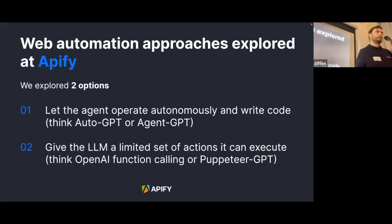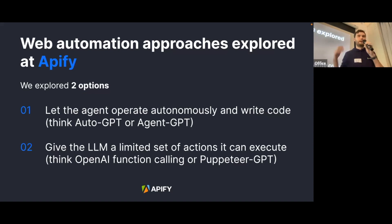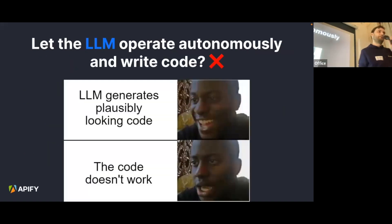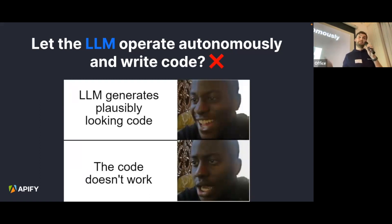We explored two approaches. The first was to let the agent operate autonomously — generate code, execute it, search the web — like AutoGPT or AgentGPT. The second approach was more restricted: give the agent just a set of specific actions it can execute, constrained like OpenAI function calling or Puppeteer GPT. The first approach didn't work well — the generated code looked great but either didn't run, or it would make up HTML class selectors that don't exist, making the code useless.